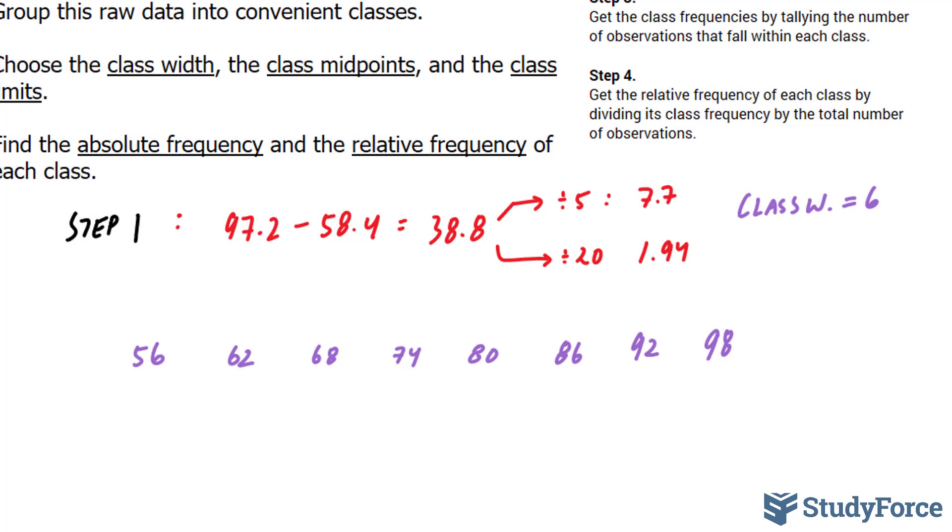With these class limits, we can find the midpoint of each. For example, to find the midpoint between this number and this number, we add them up and divide by 2. And the same goes for all of these other class limits.